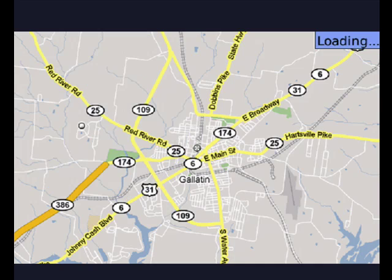Now, of course, by default, Google Maps defaults to map view, where you can see all the roads and highways and even railroad tracks. But they also have a way to see it in satellite view, which gives you a unique perspective and allows you to see things in a way that you don't normally see them on just a map.